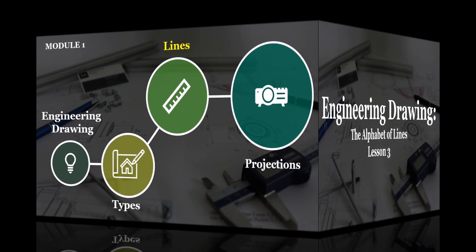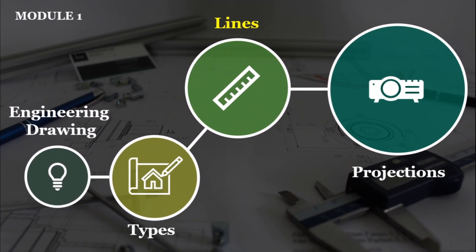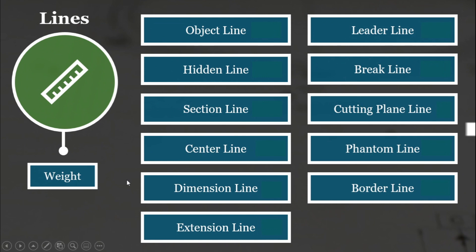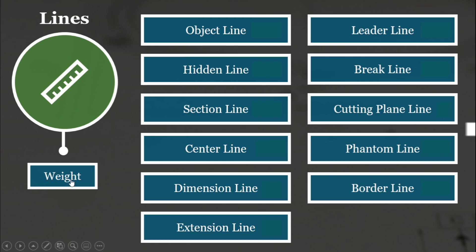Shown in this slide is our learning roadmap. Now, let's look into the various types of lines used in engineering drawing. Here are the various types of lines as discussed in our introductory video. If you have not yet watched the introductory video, I have included it in the description box below for easier access. Now, before we discuss the various types of lines, let's first talk about the various weights of lines.